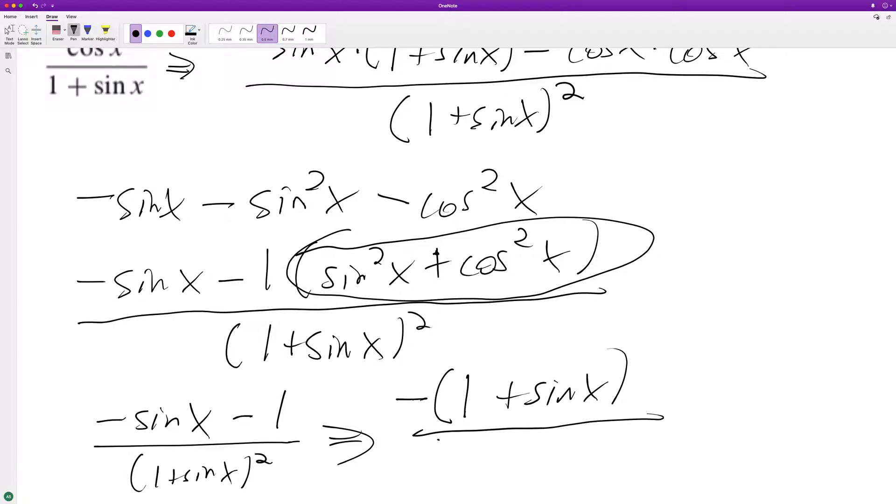And this is over the one plus sine x and instead of squared I'm writing as one plus sine x times one plus sine x. So this cancels this out and we're left with negative one over one plus sine x and that's it. All right, hope that helped you out, thanks for watching, have a great day.